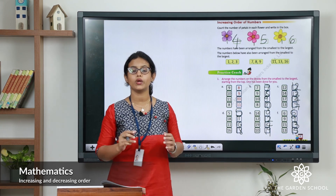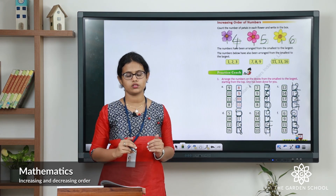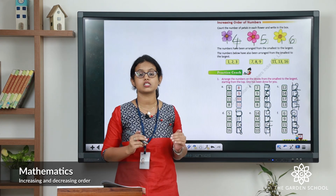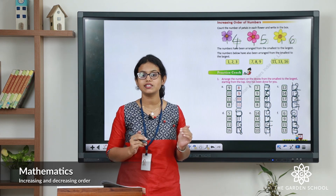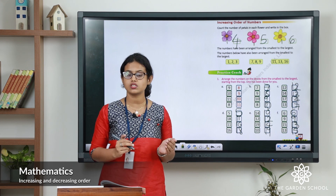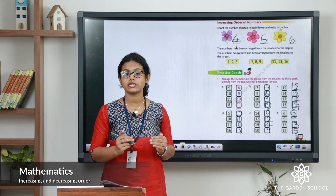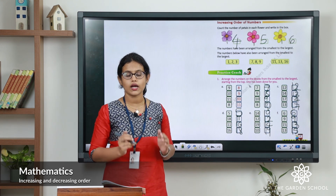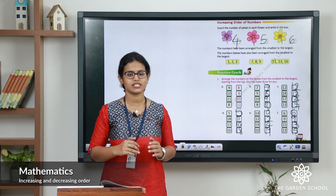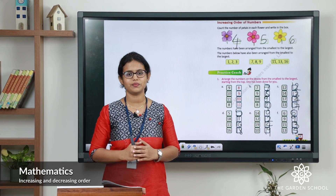In this chapter, we learnt about increasing order and decreasing order. When you arrange numbers from smallest to largest, it is called increasing order or ascending order. And when you arrange numbers from largest to smallest, it is called decreasing order or descending order. I hope you are clear with increasing order and decreasing order. We'll meet in the next class with a new topic. Till then, bye.